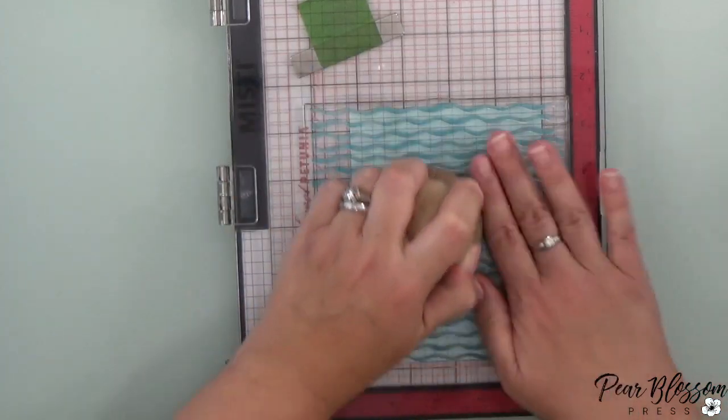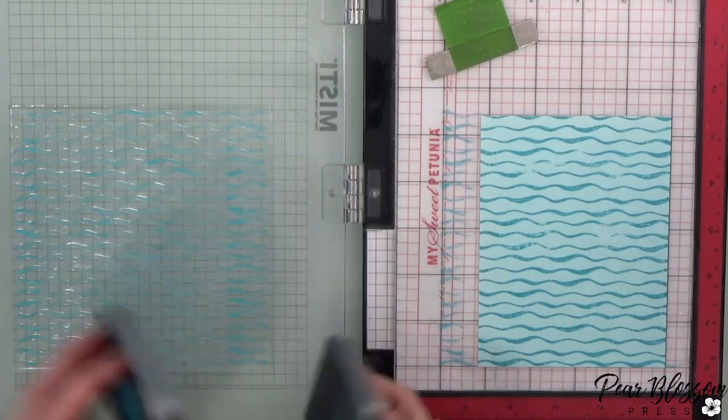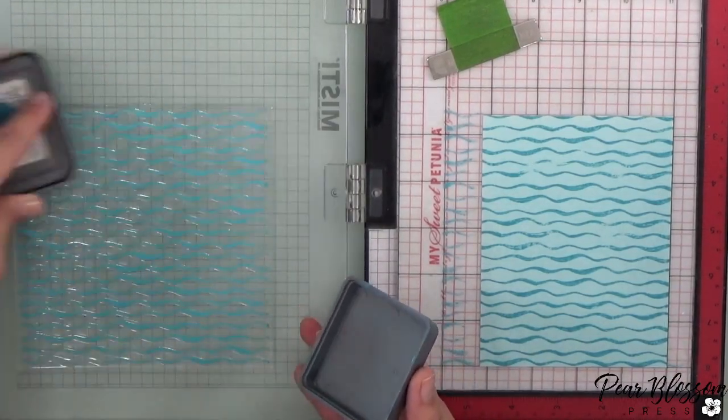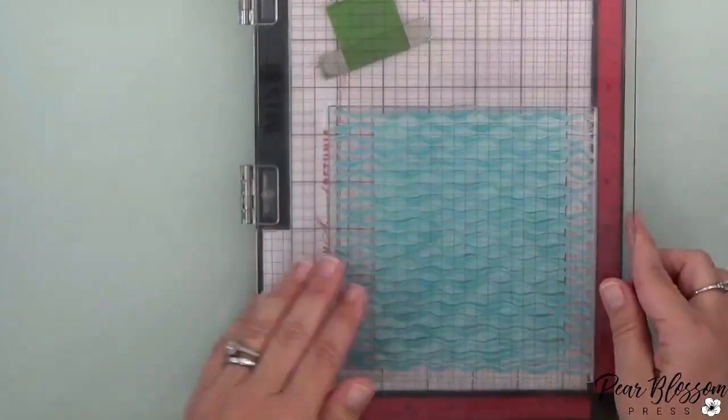And then I've gone ahead and inked it up. For this one I'm going to just ink up the whole background, using the entire stamp kind of the original way it's designed to be used.